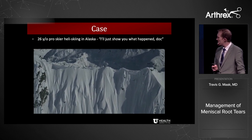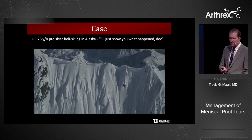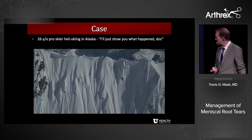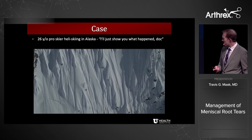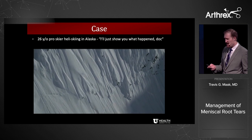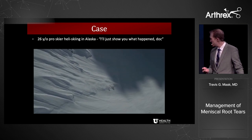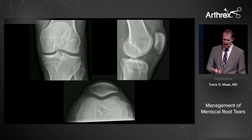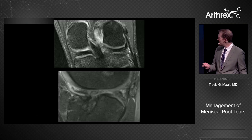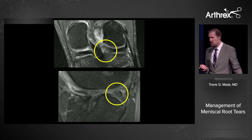Another case of mine: this is a pro skier heli-skiing in Alaska. When I asked how he was injured, he pulled out his phone and showed me the video. I was surprised he was coming in with the relatively small injury given the mechanism. This person had a previous ACL reconstruction and came in with, in addition to his ACL, a lateral meniscal root tear — and again, these can be missed if you're not careful.